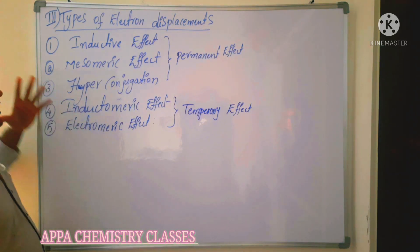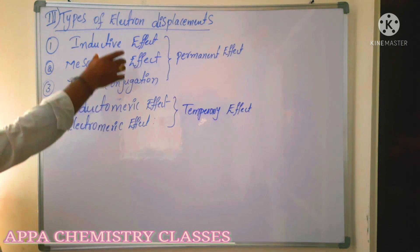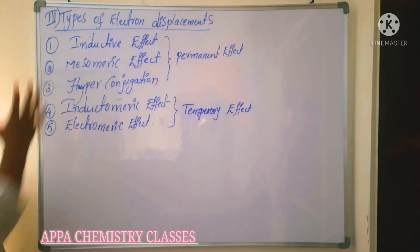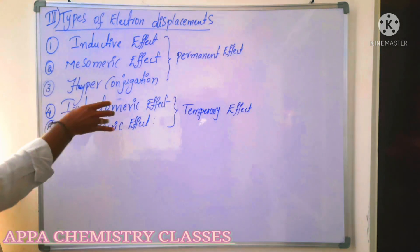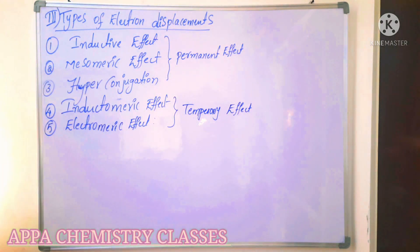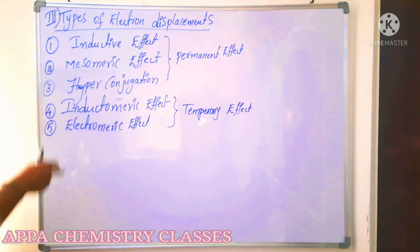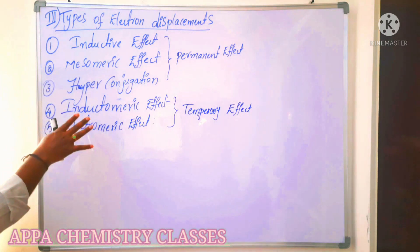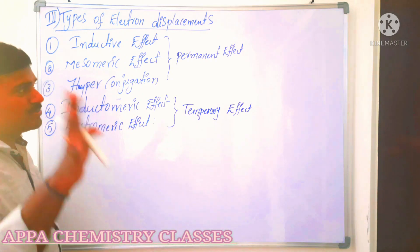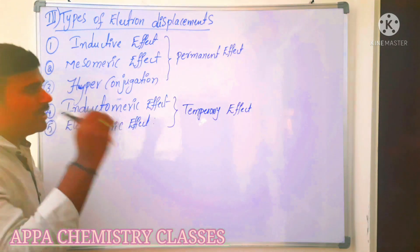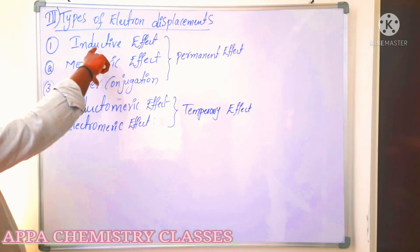The first type of electron displacement is the inductive effect. The five major types of electron displacement are: inductive effect, mesomeric effect, hyperconjugative effect, inductomeric effect, and electromeric effect. These are the five major types of electron displacement that take place in a substrate molecule.